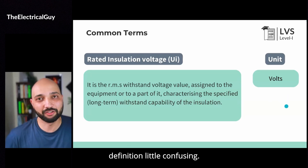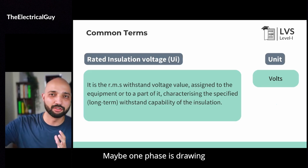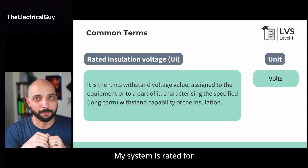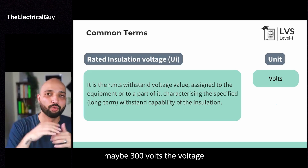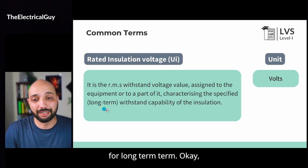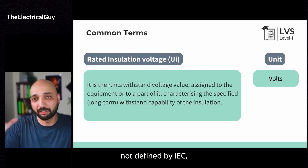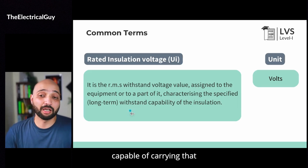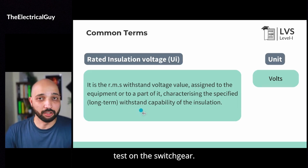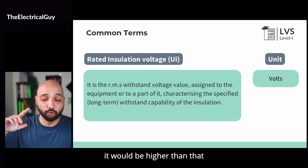Now you might find the definition a little confusing — I will simplify it. So there could be a situation where my system is imbalanced. Maybe one phase is drawing a huge lot of load, other two are not. In that case, there would be imbalance and maybe my system has to carry additional voltage for some time. My system is rated for let's say 230 volts, but because of this imbalance, maybe 300 volts of voltage imbalance is coming. In that scenario, my switchgear should be capable of carrying that voltage for long term. IEC does not specify whether long term means one hour, two hours, or three hours — that's not defined. But the switchgear must be capable of carrying that additional voltage for a long time, proven by conducting different tests on the switchgear. You will also find this parameter mentioned on the catalog or on the nameplate of the low voltage switchgear as rated insulation voltage, and it would be higher than the rated voltage.